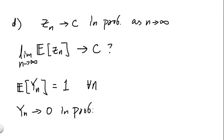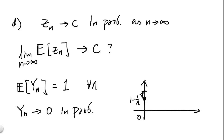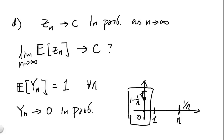This means yn can get very close to 0 in probability, yet its expected value stays at 1. The reason goes back to how yn was constructed: as n grows, the probability of yn being at 0 is 1 minus 1/n, approaching 1. But on the rare occasion yn is not at 0, it equals n — a huge number — even though with only probability 1/n. These two factors cancel, keeping E[yn] = 1 always. This example shows convergence in probability is not strong enough to guarantee the mean converges to the same number.